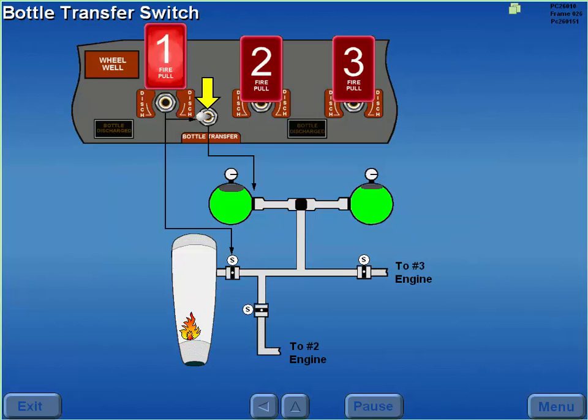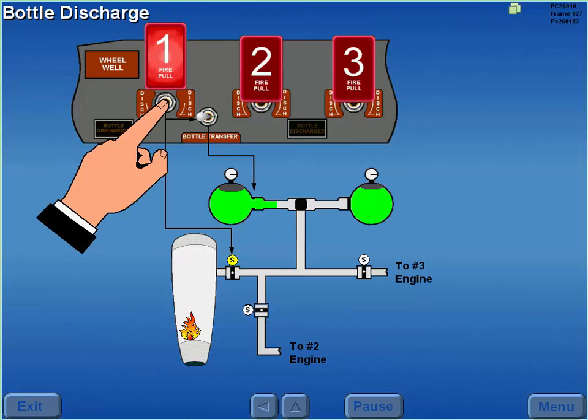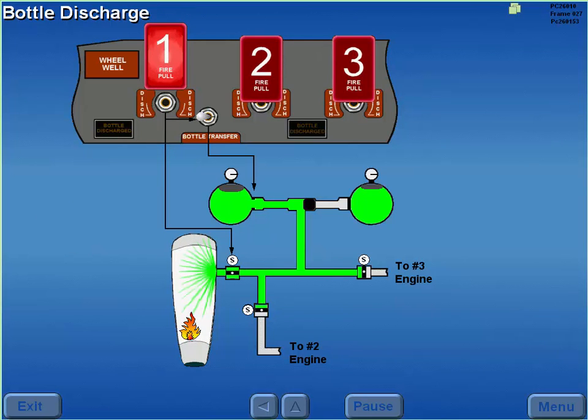The bottle transfer switch selects which fire bottle, left or right, is discharged. The left bottle is normally discharged first. Pressing the discharge button releases the bottle's extinguishing agent to the selected engine.